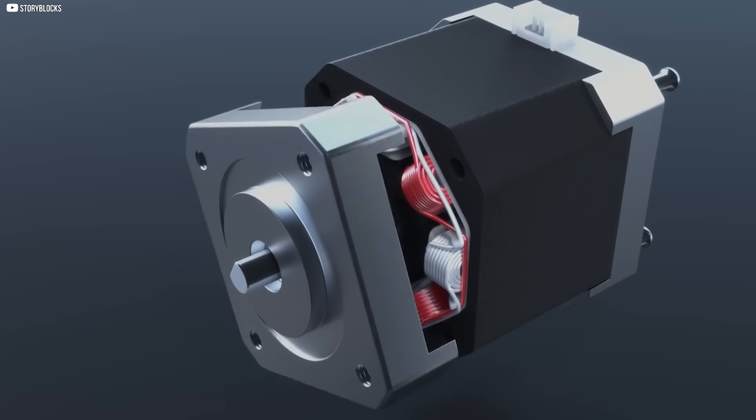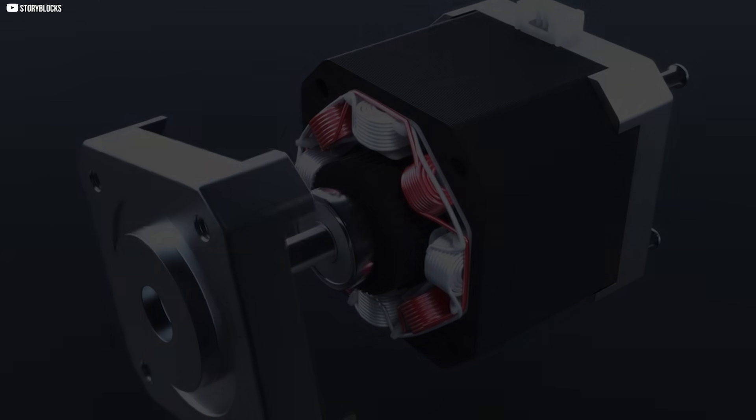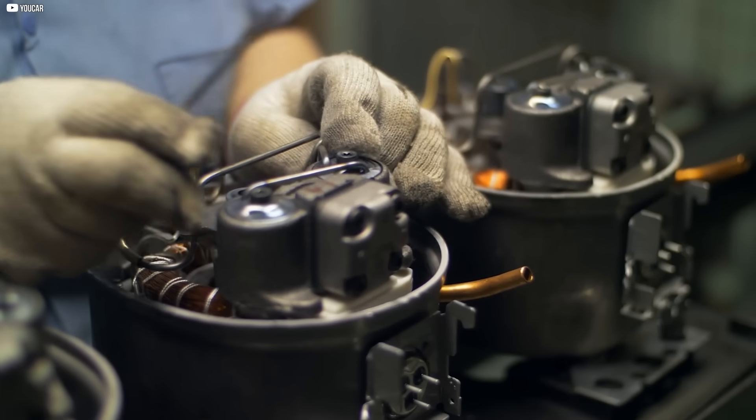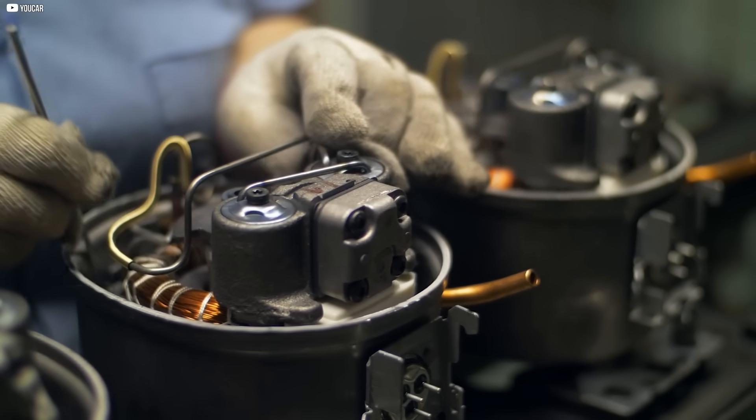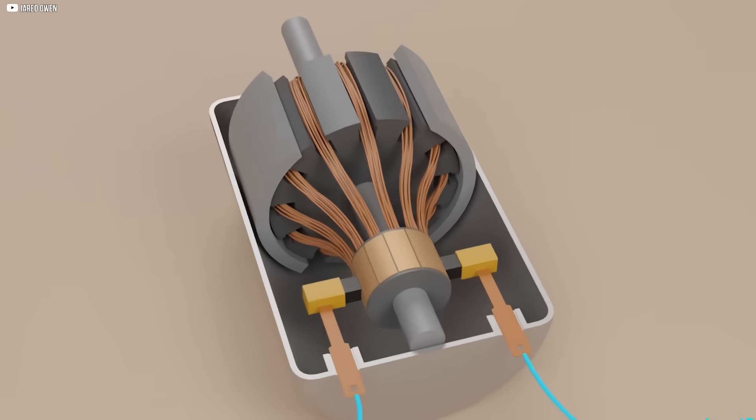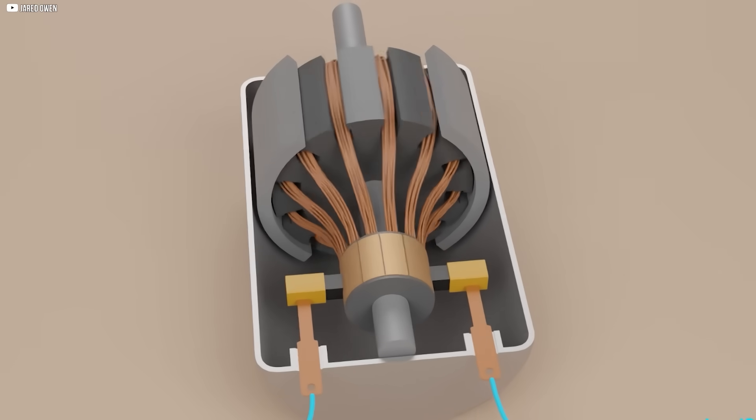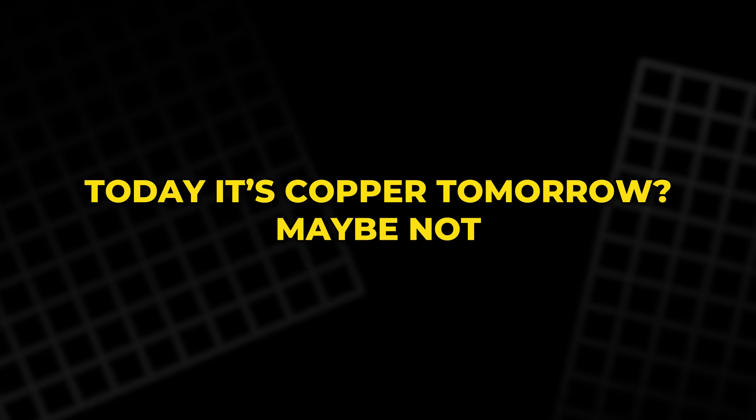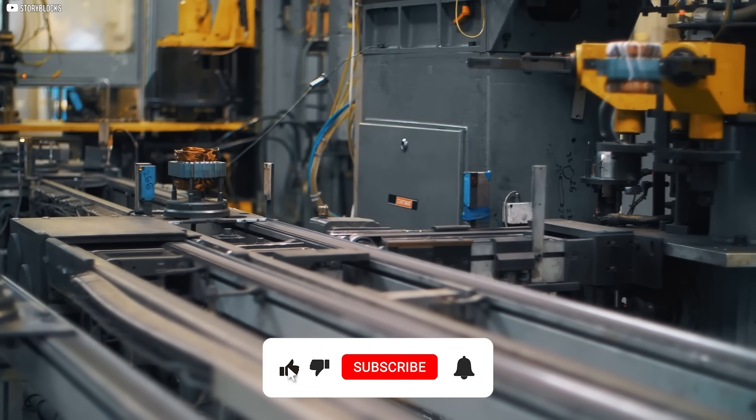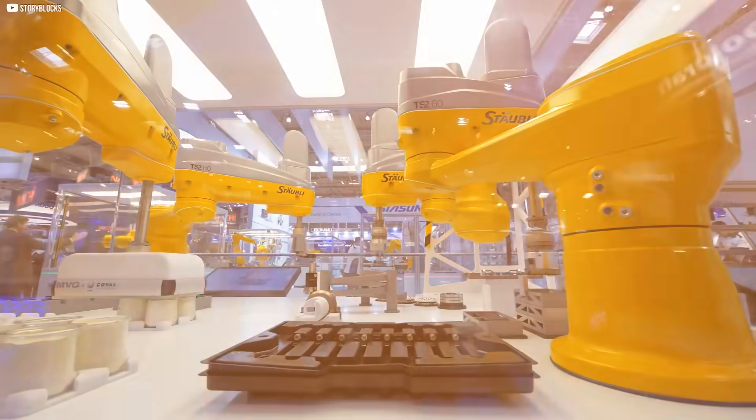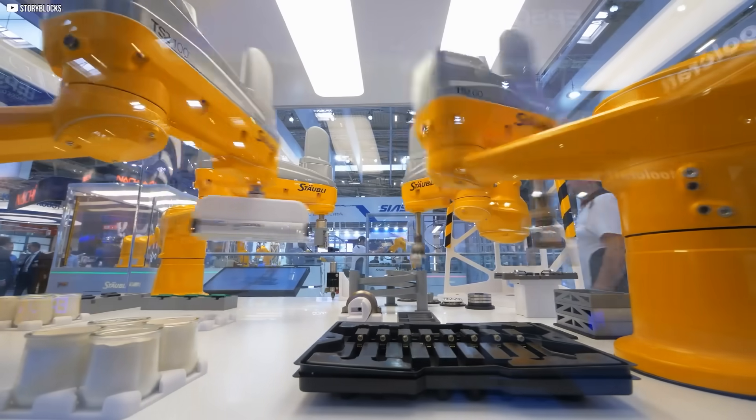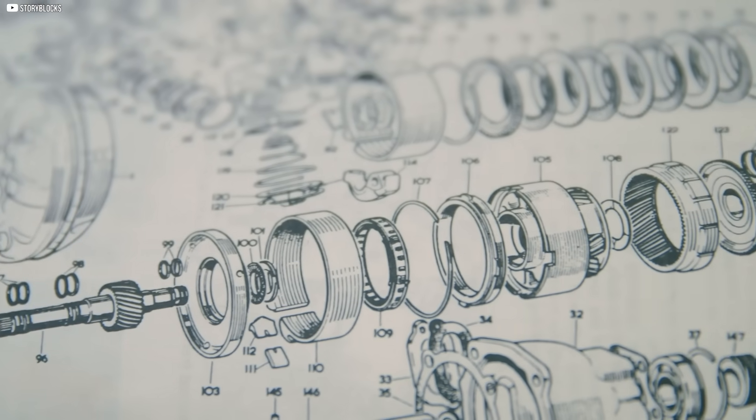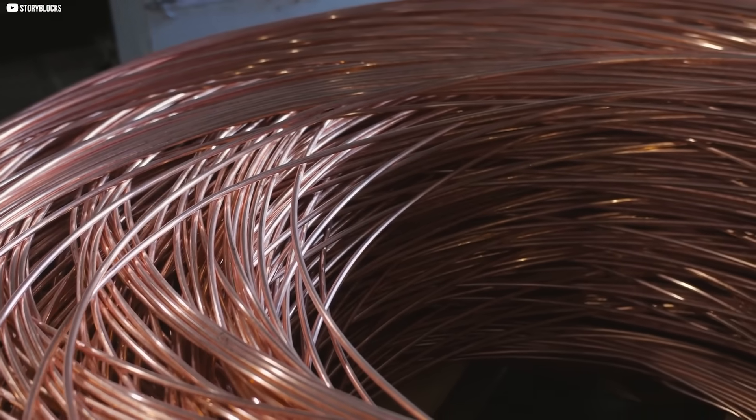This might be the first time you're hearing about carbon-powered motors, but that's how big shifts often begin - quietly, in labs, not headlines. But they don't stay quiet forever. Next time a motor spins, think about what's inside. Today it's copper. Tomorrow, maybe not. If this sparked your curiosity, hit like, subscribe, and stick around for more stories of the tech that's quietly changing everything. And let us know in the comments - could you trust a motor with no metal, or does copper still rule? Thank you.